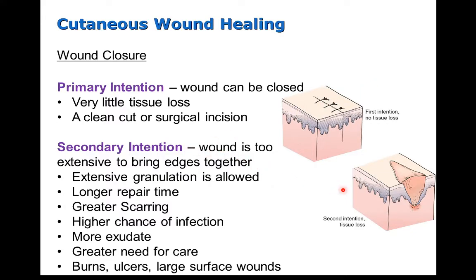Sometimes wounds must heal by secondary intention — from the bottom up — if there's a large tissue deficit where the wound is too big to approximate the skin edges together. Also, if the wound is infected or even potentially infected, it will be left open to avoid an abscess. Healing by secondary intention takes longer and usually results in a bigger scar, with more drainage, more topical medications, more dressings, and more care. Burns, ulcers, and wounds with larger surface areas are usually managed by secondary intention healing.